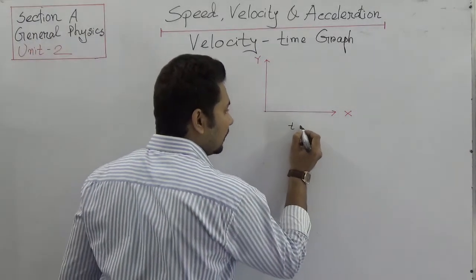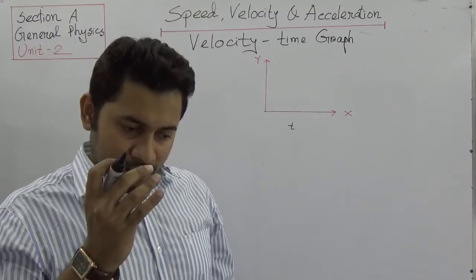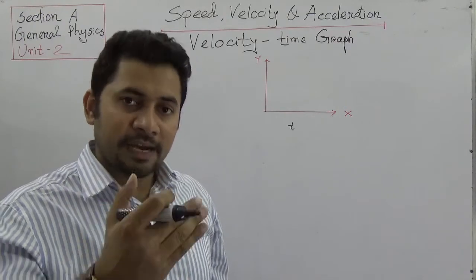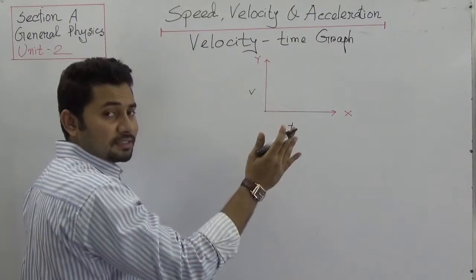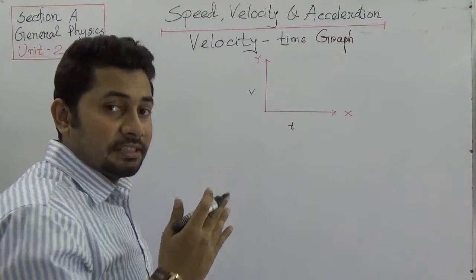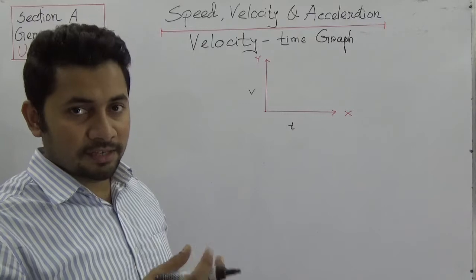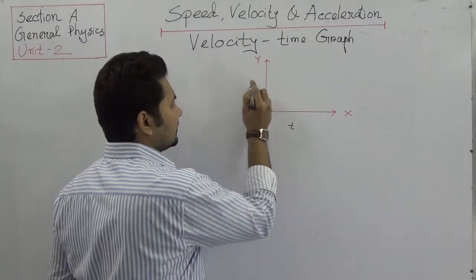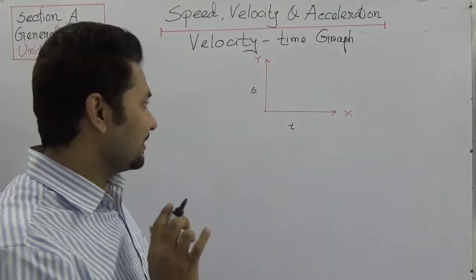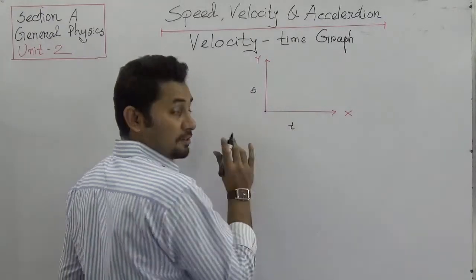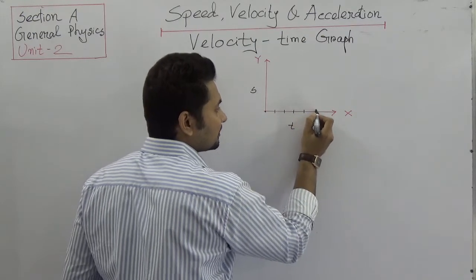Why? Because if a car is moving, or if anything is moving, then the velocity changes with respect to time. We will show the velocity-time graph in a way so that it explains acceleration, and even in displacement-time graphs we can find the velocity of the car. Let's say time goes from zero to one minute, two minutes, three minutes, four minutes, five minutes.